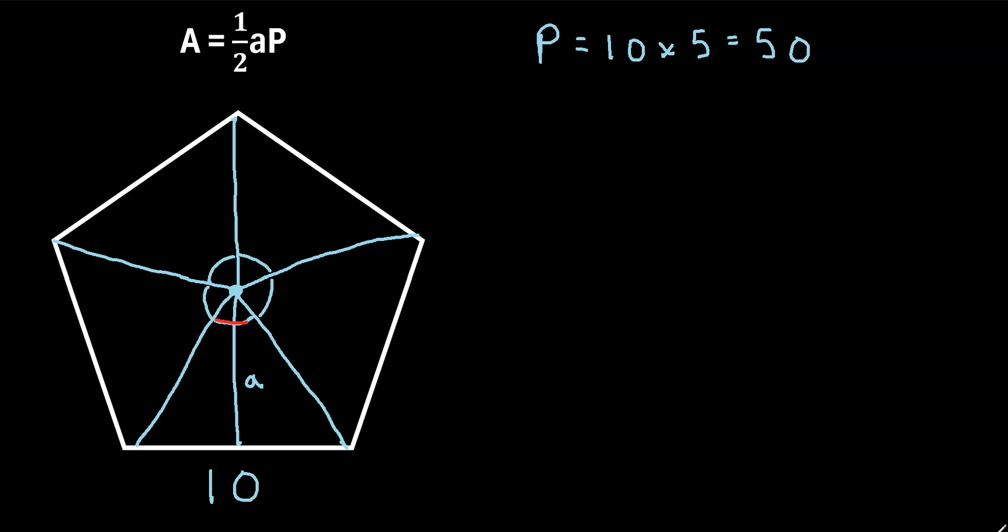So to find just this angle right here of one of these triangles, we can say 360 degrees divided by five. So that turns out to be 72 degrees. So this red angle right here is 72 degrees, and the apothem perfectly splits this in half. So 72 degrees divided by two is 36 degrees. So we can say this little angle right here is 36 degrees.